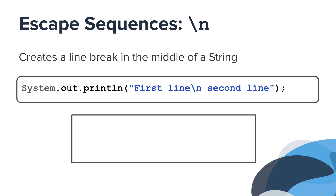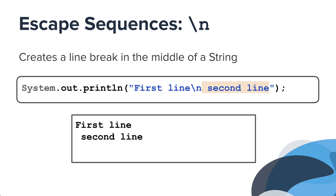The backslash n creates a line break in the middle of the string. When you run this program, you would get the text before the escape sequence on one line, and the text after the escape sequence on the next line. Notice how the space is included in the second line.